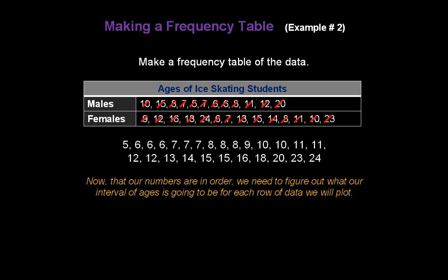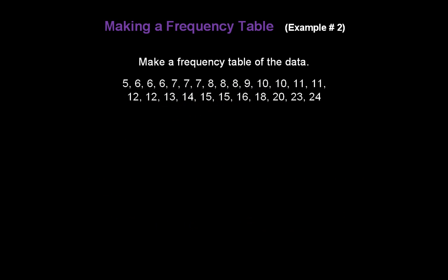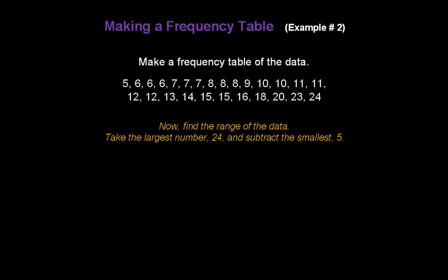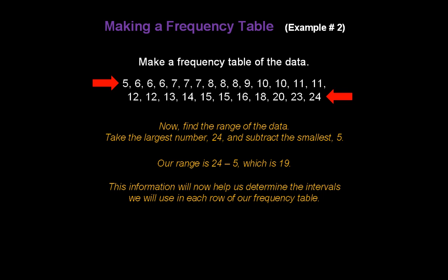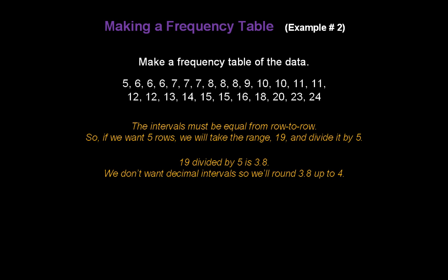Now that our numbers are in order, we need to figure out what our interval of ages will be for each row. Frequency tables are easiest to read with about five rows of data, so let's aim for five rows. To find the range, take the largest number, twenty-four, and subtract the smallest, five. Twenty-four minus five gives us nineteen. To get five rows, we divide the range by five: nineteen divided by five is three point eight. We don't want decimal intervals, so we round up to four. Remember the number four — that's going to be our interval size.